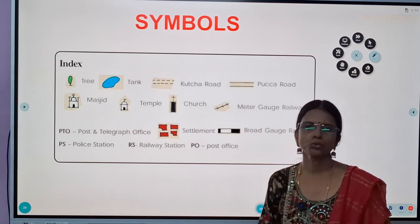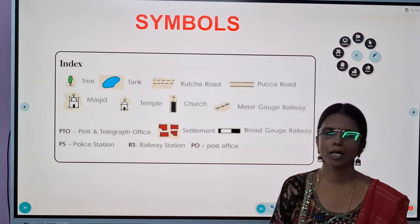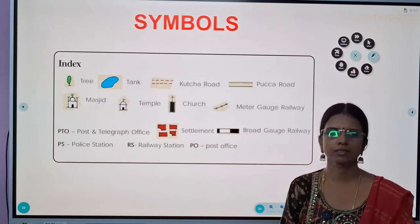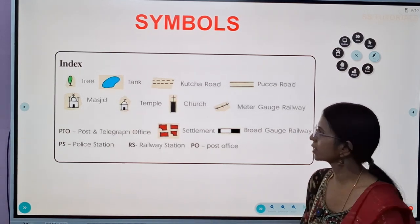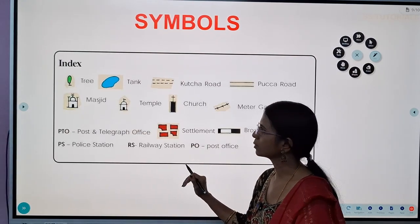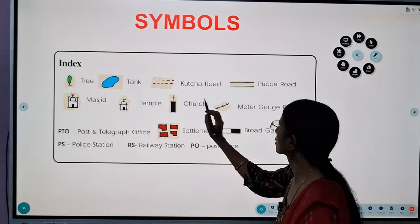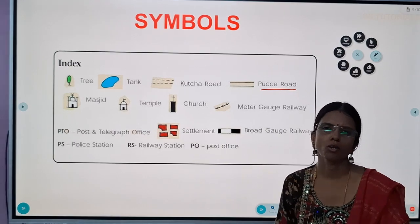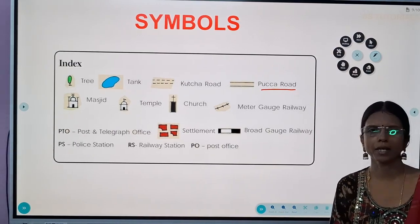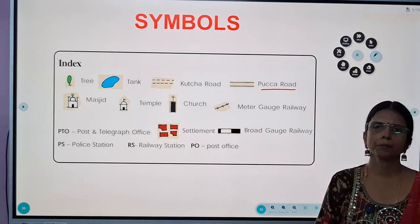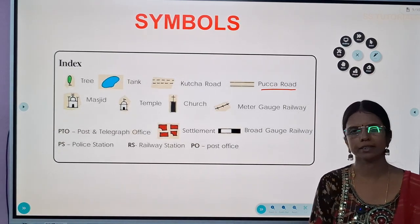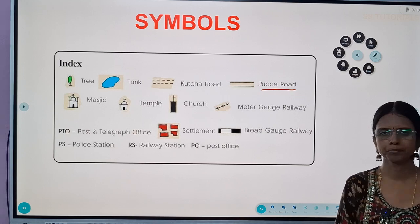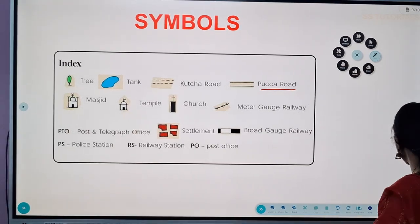Maps are too small, so we always show things on a map with the help of symbols. Each symbol represents a different area or place. In the index we can see different kinds of symbols such as tree, tank, kaccha road, pakka road, masjid, temple, church and so on. These are common symbols shown on any map. Map makers prepare symbols appropriate to their needs, and these commonly used symbols are called conventional symbols. Using these symbols we can draw any map.